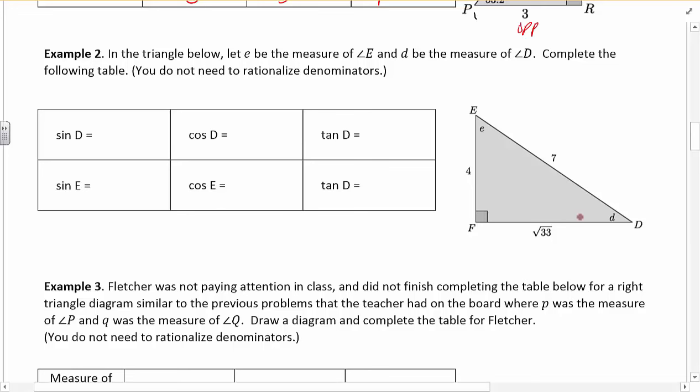So in the triangle below, we've got E and D. Sine D. Okay, so sine. So, sine D would be the opposite side divided by the hypotenuse looking from angle D. So opposite divided by hypotenuse, opposite D is 4. Hypotenuse is across from the right angle, 7.